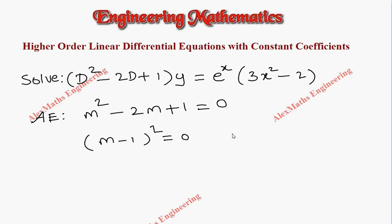We get two values for m, both are equal. So the complementary function is c1 plus c2x times e to the power mx, where m is 1.